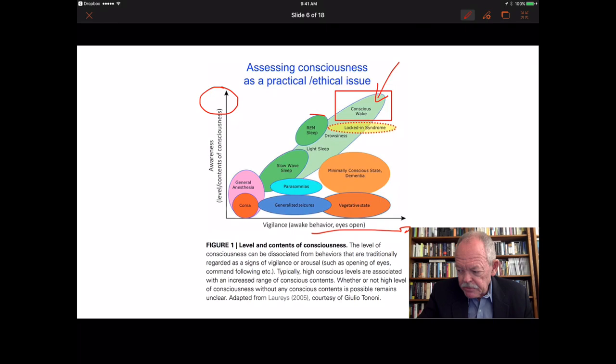For example, REM sleep. Now in REM sleep, you are conscious. Believe it or not, you have vivid dream experiences. But of course, you are less vigilant. You are less awake and attuned to the environment. In fact, you are disconnected from the environment. And here you have another sleep stage, namely slow-wave sleep, which is the deep sleep where nothing happens in your brain and you might as well be dead or deeply unconscious. Now here is general anesthesia and coma where there is zero vigilance and, as far as we know, zero content. So there are these two dimensions of consciousness: vigilance and being conscious, and the specific contents of your consciousness.